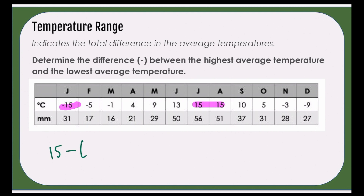Now we know that two negatives make a positive. So in fact, what we will be doing is adding 15 plus 15. But just be mindful, we are looking for the difference. The difference here is 30 degrees Celsius, and we want to make sure that we include our units of measurement. So for our temperature range for this location, it is 30 degrees Celsius.